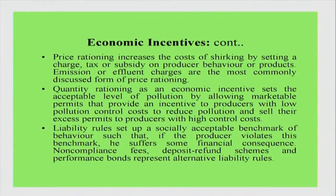In addition to price and quantity rationing, the government can also come up with liability rules, which define a socially acceptable benchmark of behavior. If the producer violates the benchmark, he or she suffers financial consequences. Examples include non-compliance fees, deposit-refund systems, and performance bonds — charges paid to the government, with money returned if the firm complies and forfeited if it does not. Liability rules are especially used in the most polluting industries in many countries.